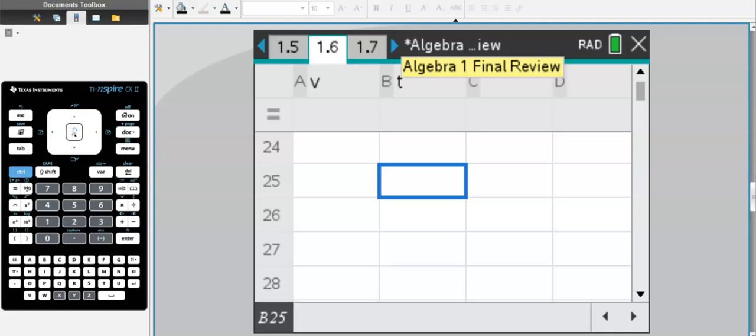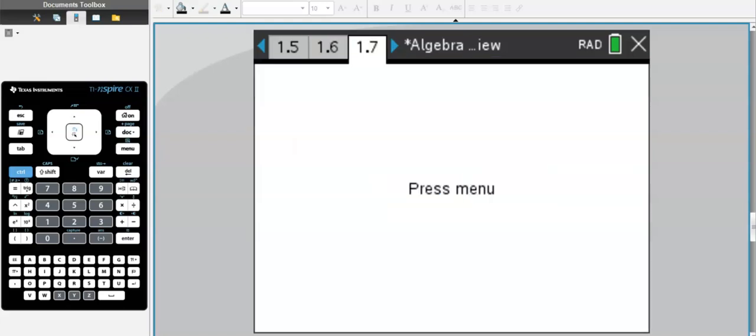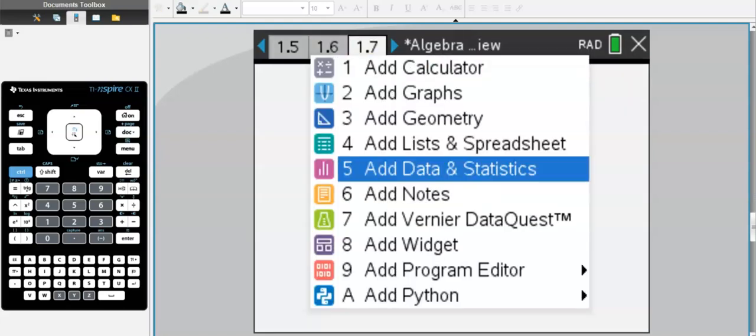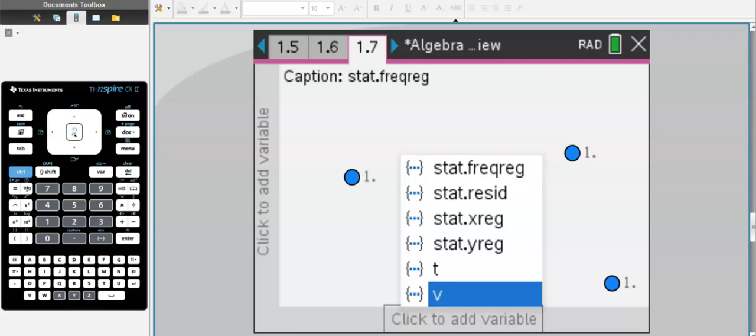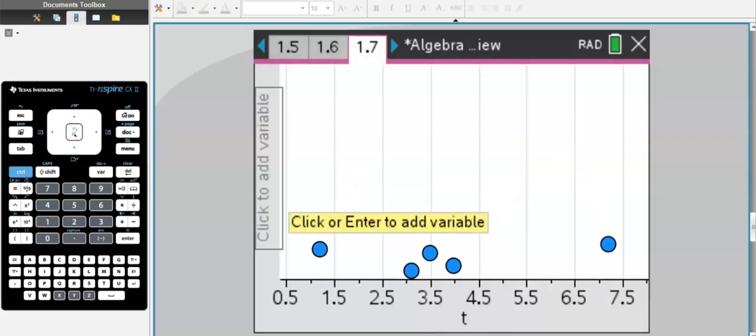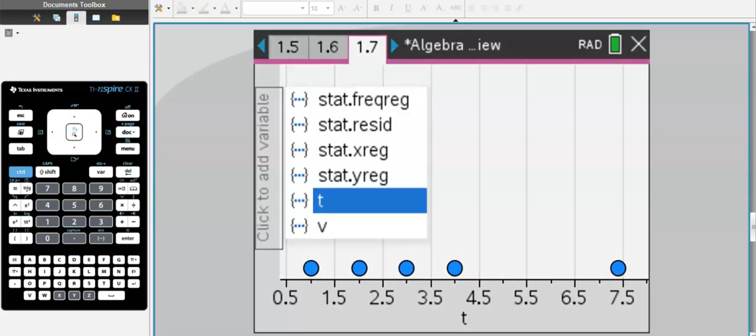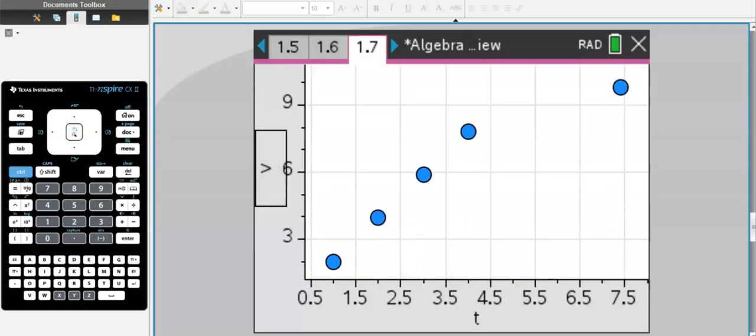One of the most important things you need to know for your Algebra 1 exam is learning how to calculate regression. To do that, we're going to hit menu, ctrl doc, and then add data and statistics. On the x-axis, you're going to put your dependent variable. On the y-axis, you're going to put your independent variable. You see we get this graph that's just not quite linear, but it looks pretty much like a line, so I'm going to go with linear regression.